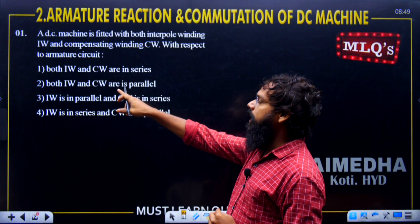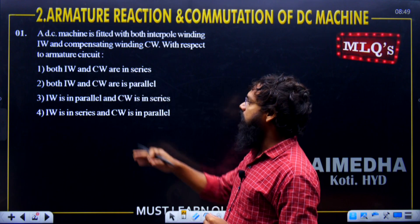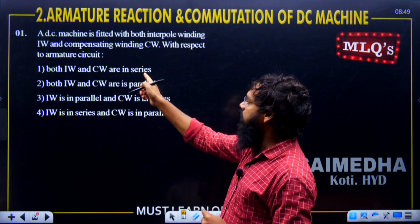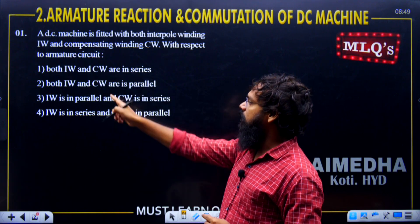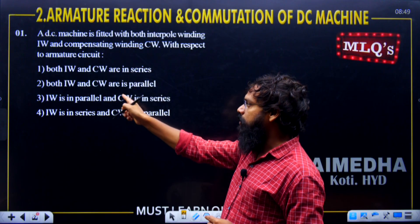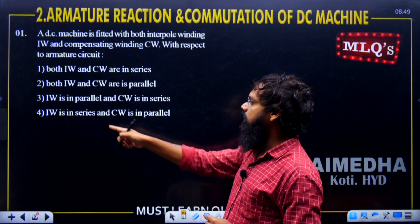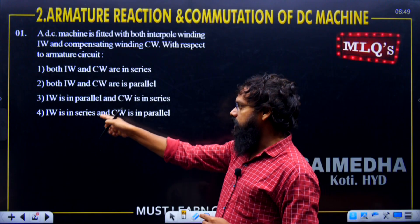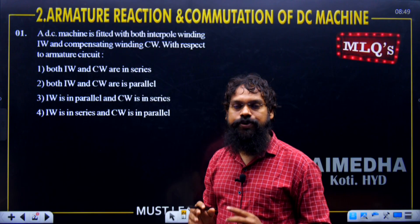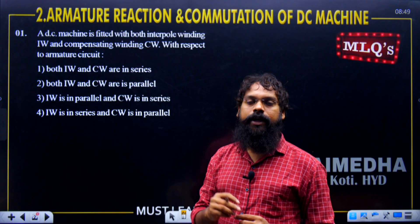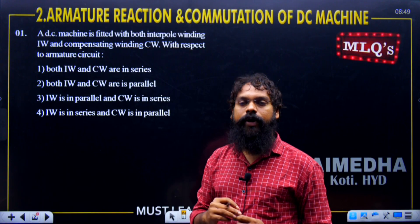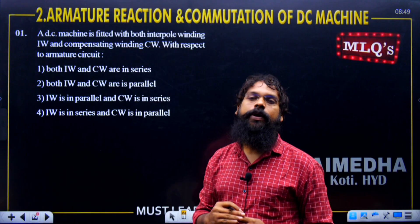The options are: both interpole winding (IW) and compensating winding (CW) are in series; both are in parallel; IW is in parallel and CW is in series; IW is in series and CW is in parallel. The compensating winding and interpole winding are connected in series with the armature.